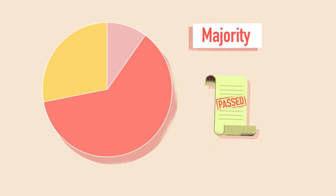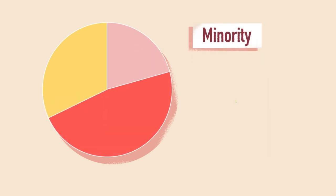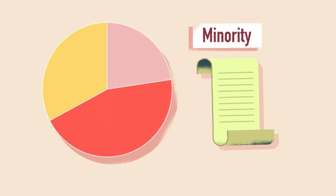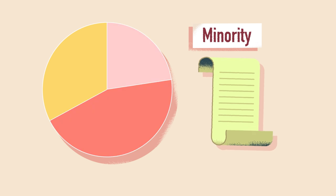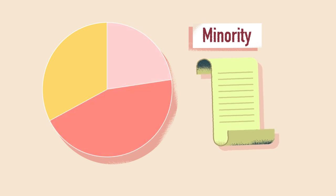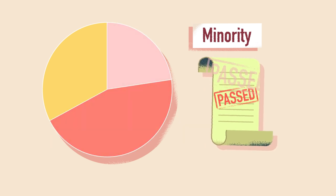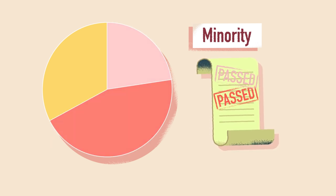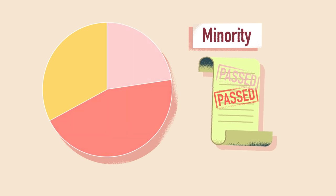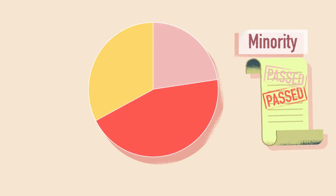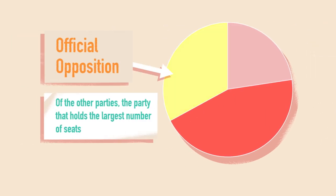A minority government occurs when a governing party wins less than half of the seats, but is able to maintain the support of a majority of the MLAs. Of the other parties in the legislature, the party that holds the largest number of seats becomes the official opposition.